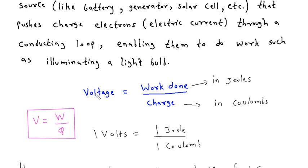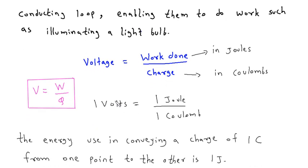The formula for voltage is V equals work done divided by charge (W/Q). Work done is measured in joules, and charge in coulombs. So 1 volt equals 1 joule per 1 coulomb.